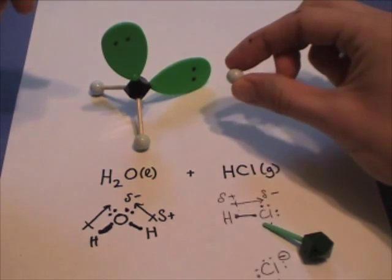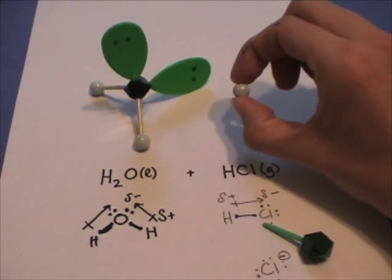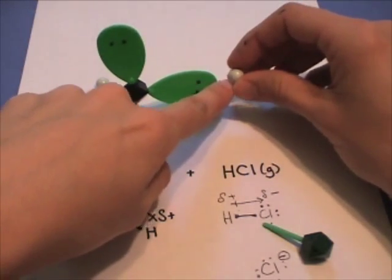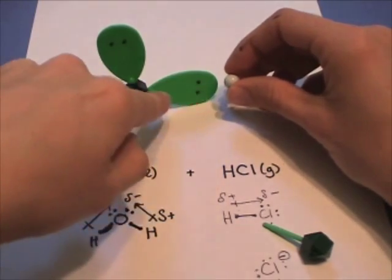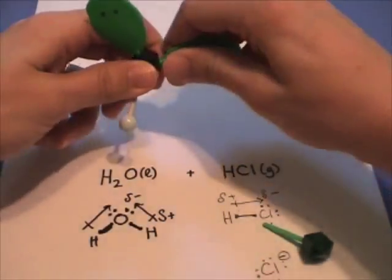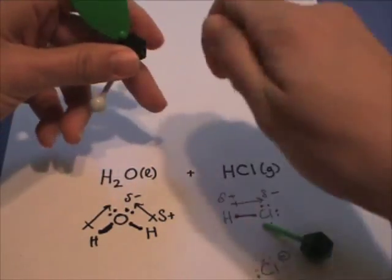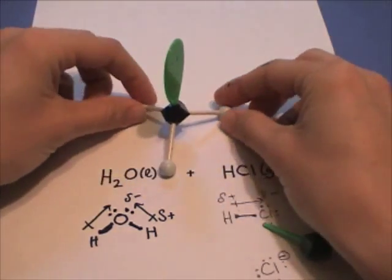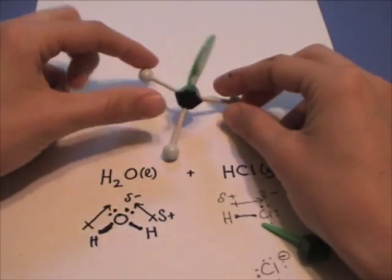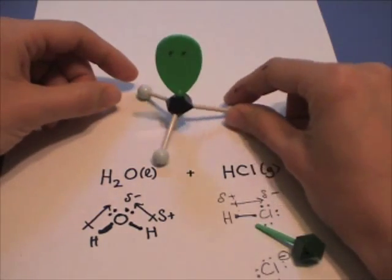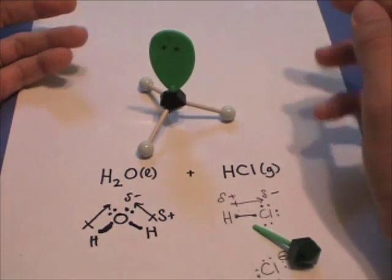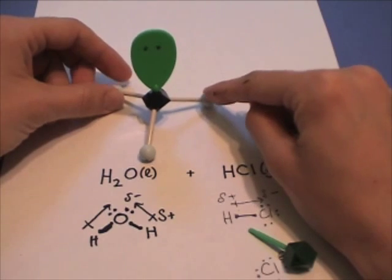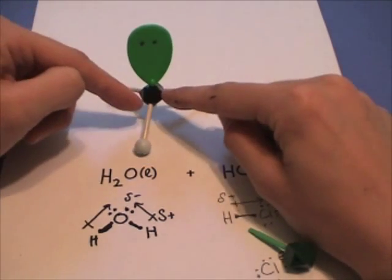But you know what? This proton's not very happy. It's just hanging out as a bare proton. No good. It says, you know what? I'll donate my electron to you so that we can share, and you'll be happy, little proton. So let's make this proton happy. We're going to convert this lone pair of electrons into a single bond. But this oxygen actually donated its electron to the H plus. So it has a positive formal charge now.